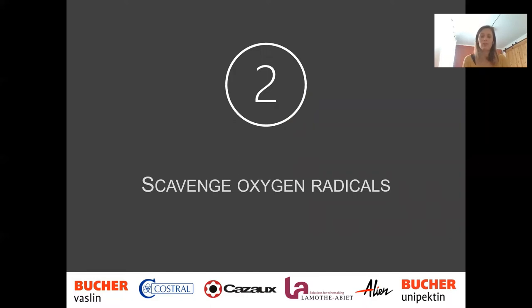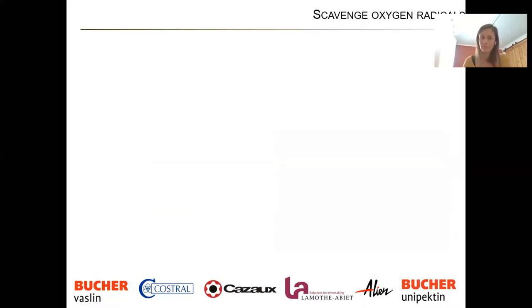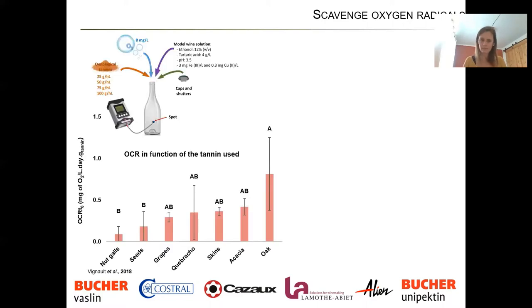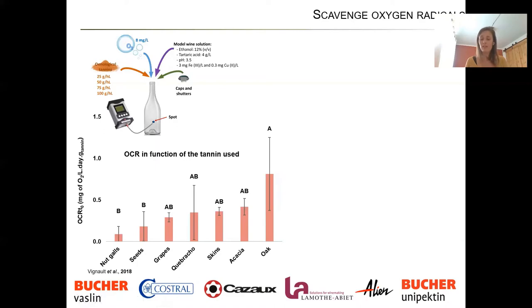The second strategy is scavenging oxygen radicals. We know from their structure that tannins are the best for this, but there are many different types of tannins from different origins — oak, grape seeds, grape skins, gall nuts — each giving different properties. Looking at research from Adeline Vigneault, who studied the oxygen consumption rate of different tannins in a controlled environment, the conclusion is that tannins with the fastest and strongest affinity for oxygen radicals are oak tannins.